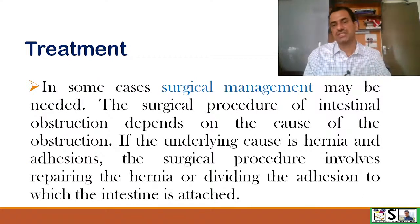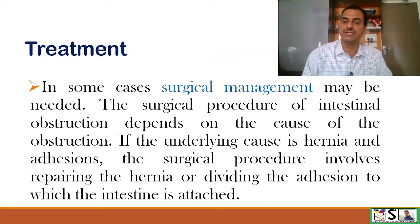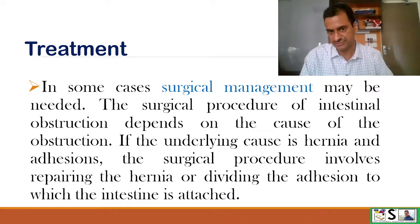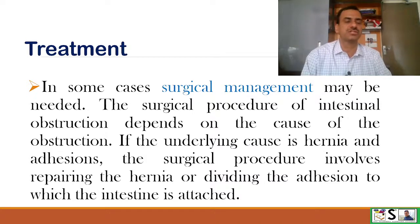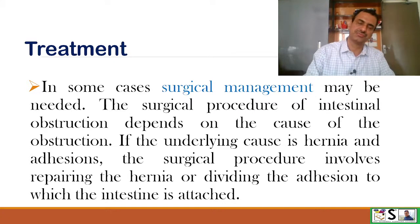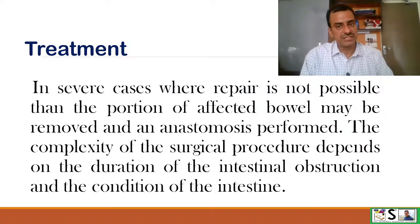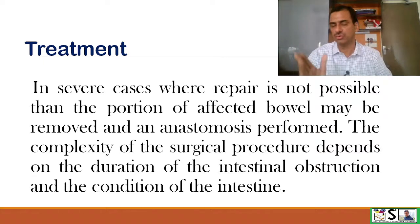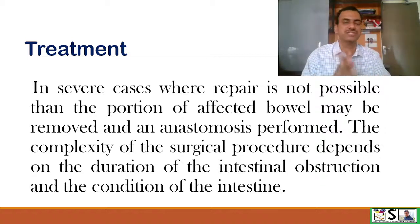In some cases, surgical management may be needed. The surgical procedure depends upon the cause of obstruction. If the underlying cause is hernia or adhesions, the procedure involves repairing the hernia and dividing the adhesions where the intestine is attached. In severe cases where repair is not possible, the affected portion of bowel may be removed and end-to-end anastomosis is performed.